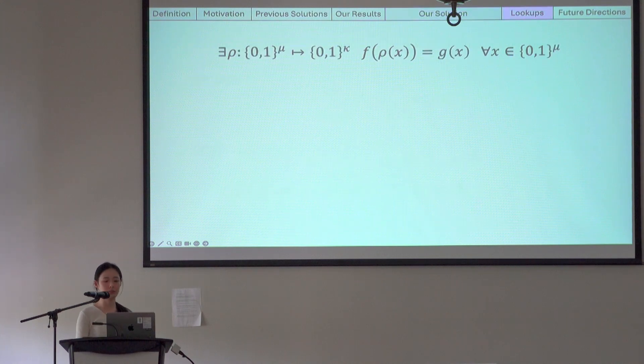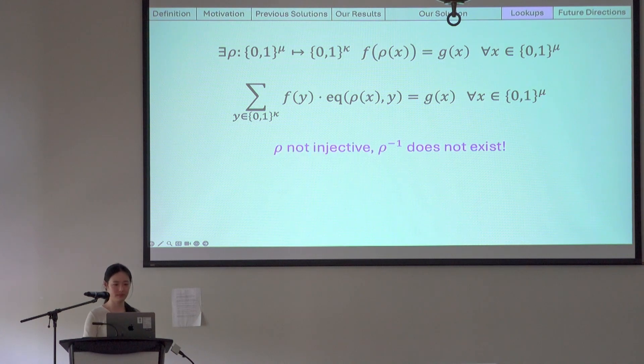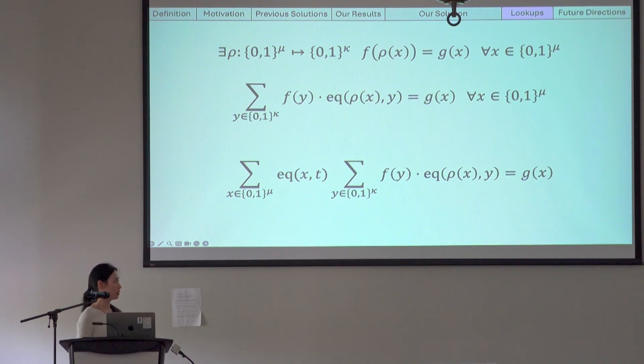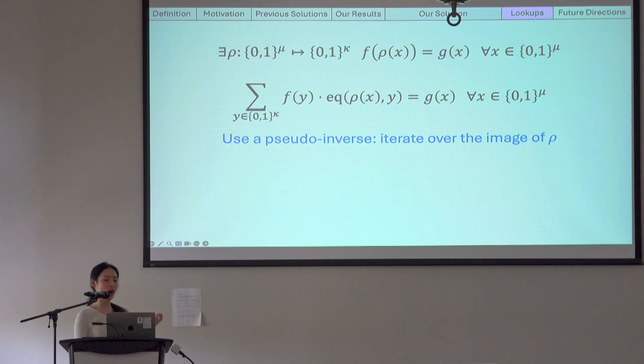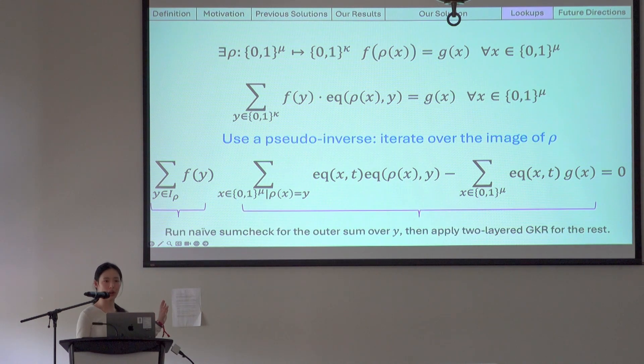Our solution can be extended to lookups quite easily, but the challenge in applying the same trick to lookups is that the lookup polynomial row is not injective, which means we cannot simply write EQ X comma row inverse of Y like we did with sigma previously. So what we ended up doing is first we'll add an outer EQ for X where T is the random challenge, and then essentially flip the summations and use a pseudo inverse. So instead of iterating over every Y in the hypercube, we'll iterate over the images of row, and sum up all corresponding X that maps to the image. We'll run the naive sum check for the outer sum over Y, and then apply the two-layer GKR trick with bucketing for the rest. The asymptotic cost is also on the order of n log log n.